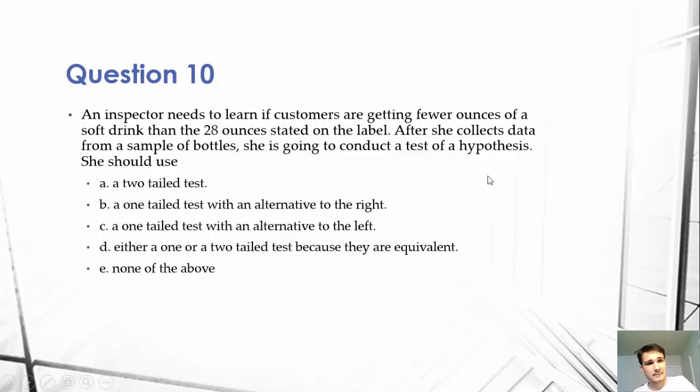We have to understand that we are looking for if the customer is getting fewer ounces of soft drink than the 28 ounces. So obviously we will be looking for what is less, and so less would be on the left side of the curve because that would be a smaller number than the mean.